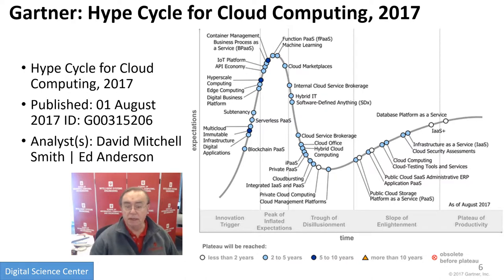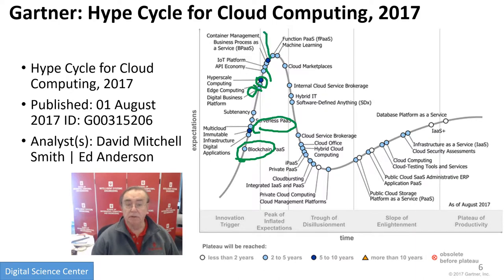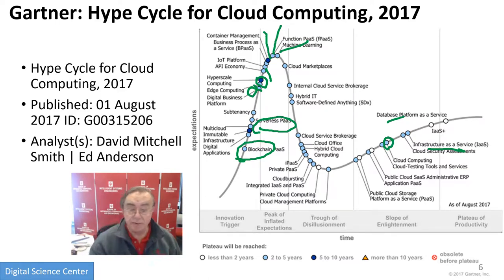Here we have the hype cycle for cloud computing. We have serverless, blockchain, edge computing, hyperscale, digital business platform, IoT platform, container management, function as a service, machine learning, software-defined anything, Cloud Office, hybrid cloud, database platform as a service, and infrastructure as a service. Cloud computing itself has finally been located on the slope of enlightenment in the cloud computing hype cycle, but it's not important enough as an emerging technology to be on the emerging technology hype cycle.